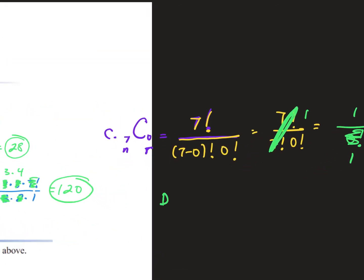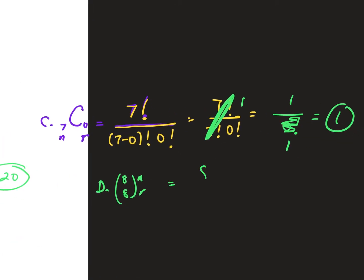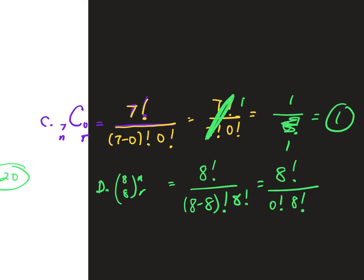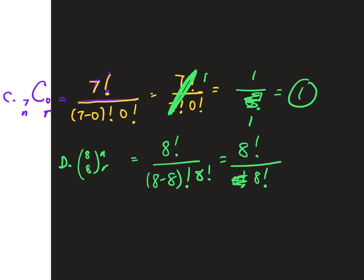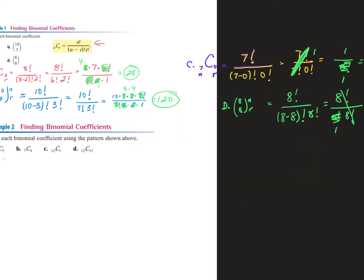D is 8 and 8. N is 8 and R is 8. So I have 8 factorial over 8 minus 8 factorial times 8 factorial — that's 8 factorial over 0 factorial times 8 factorial. We are NOT multiplying 0 times 8 in the denominator; 0 factorial equals 1. The 8 factorials on top and bottom cancel out, so the answer is 1.